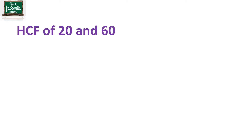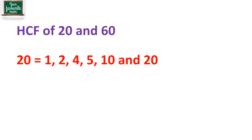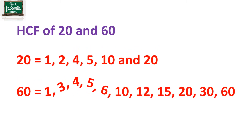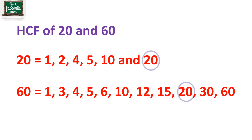So let's try and find out the HCF of 20 and 60. To do that we will first list the factors for 20 and then we will list the factors of 60 as well. We note that the common factors of the given numbers are 1, 2, 4, 5, 10 and 20. But the greatest among all is 20, so it shall be the HCF of both numbers.